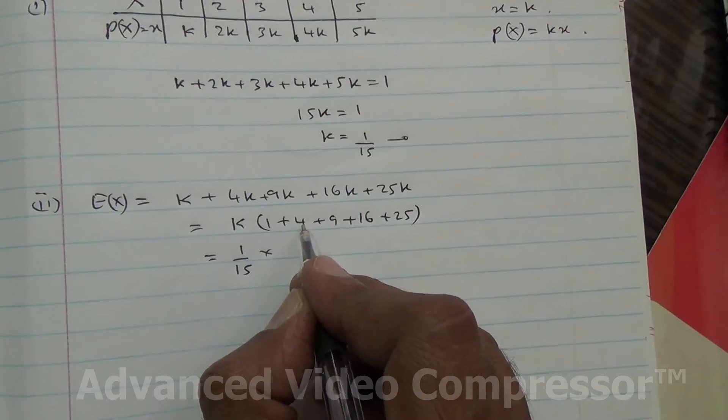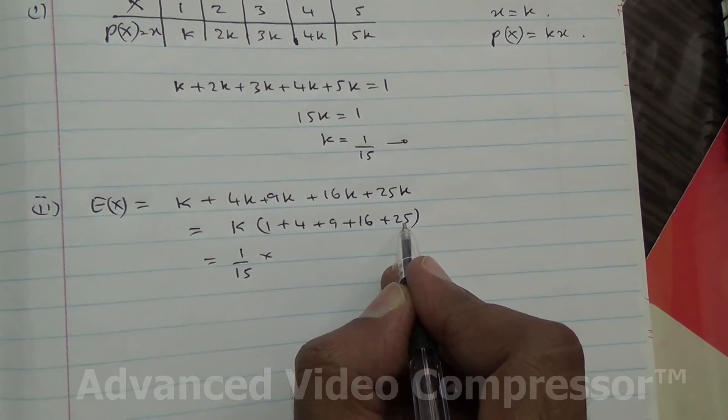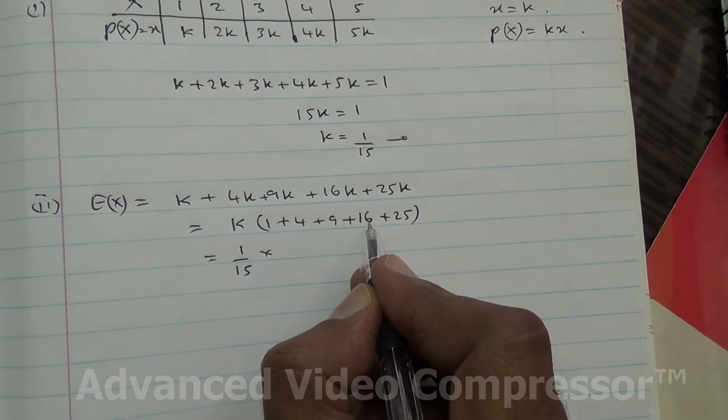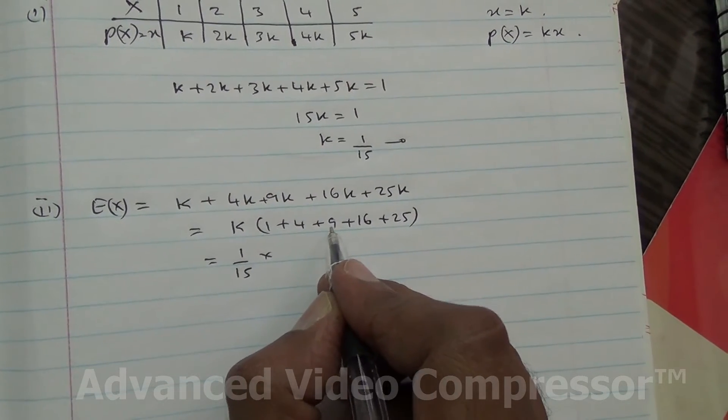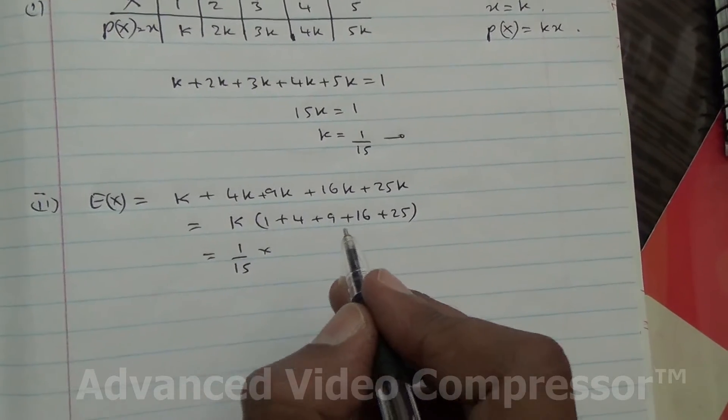1 plus 4 is 5. 5 plus 25 is 30. 30 plus 16 is 46. 46 plus 9 is 55.